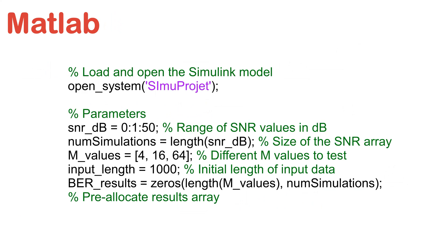Now let's go over the MATLAB code that controls the simulation. The code begins by opening the Simulink model. We also define the parameters for the simulation, including a list of SNR values which will be used to control the noise level, and the size of the QAM symbol set M.